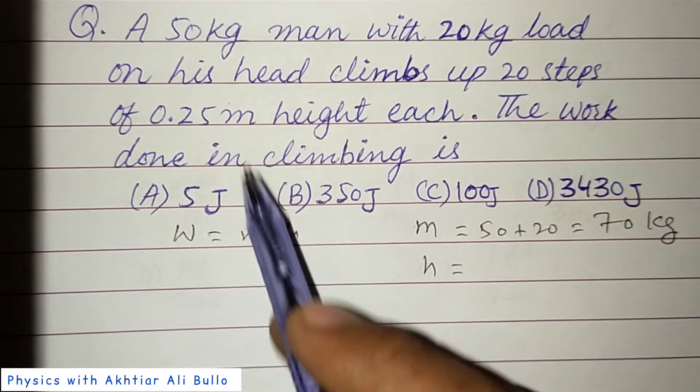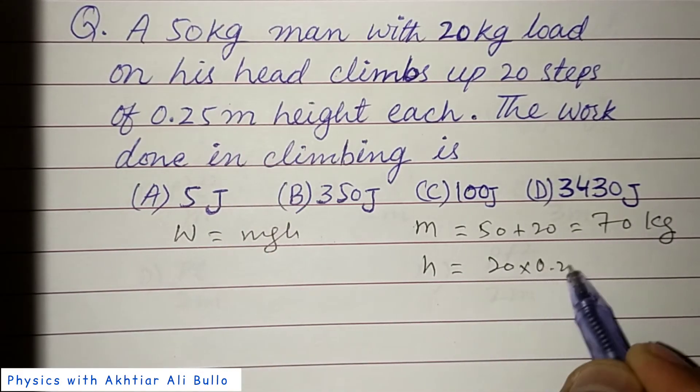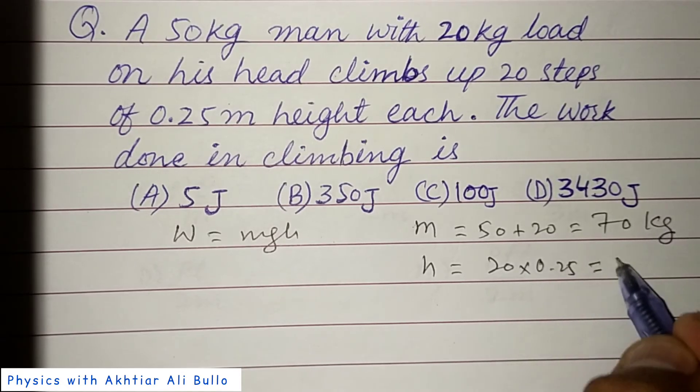Total height means 20 steps, so the height of each step is 0.25 meter. So 20 into 0.25, it will be 5 meters.